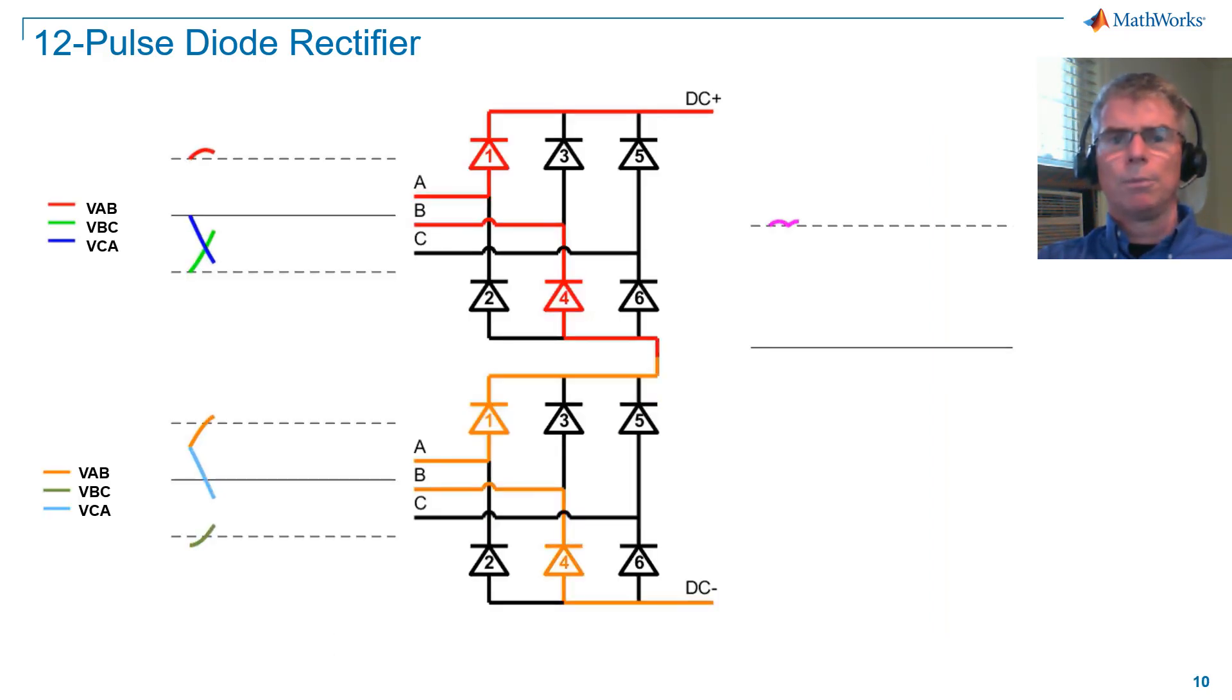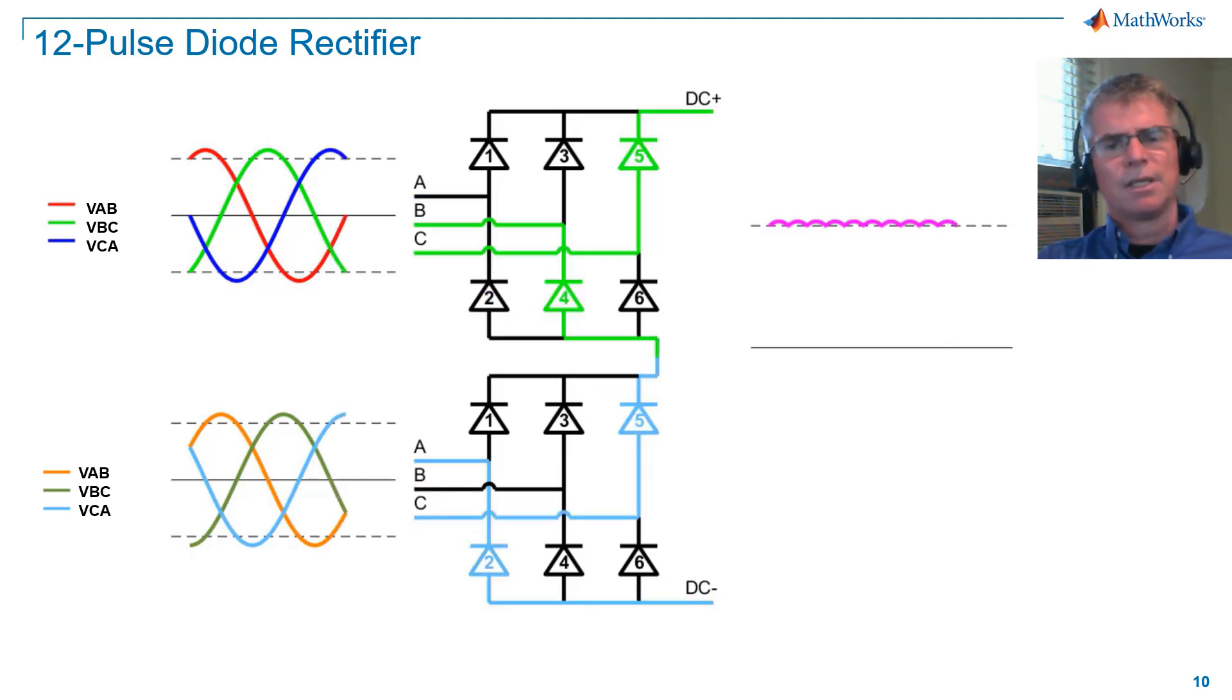Now you can see that we are commutating at 30-degree intervals, and as a consequence, we've lowered the DC voltage ripple. We've now achieved true 12-pulse operation with our 12 devices. Note that we can extend these architectures to 18-pulse, 24-pulse, and so on, but we won't cover that in this tutorial.